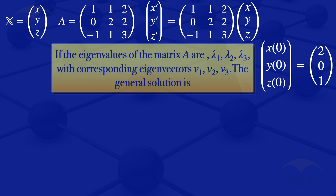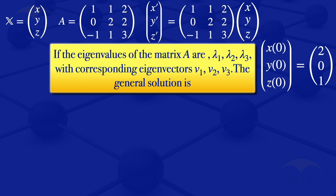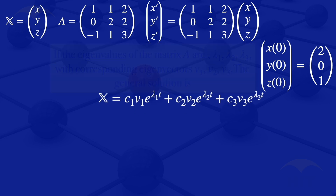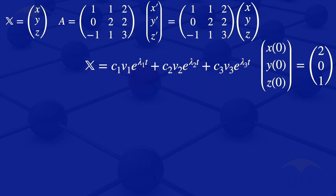If the eigenvalues of matrix A are lambda 1, lambda 2, and lambda 3, with corresponding linearly independent eigenvectors v1, v2, and v3, the general solution of the system of ODEs is given by x equals c1 times v1 times e^(lambda1*t) plus c2 times v2 times e^(lambda2*t) plus c3 times v3 times e^(lambda3*t). That's the form of the general solution.